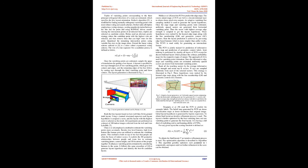However, candidate 3D boxes are generated and inference is formulated in terms of a single high-dimensional discrete random variable. A triplet of vanishing points corresponding to the three principal orthogonal directions of a room is estimated, specifying the box layout orientation. Rother's algorithm is modified for finding mutually orthogonal vanishing points with more robust voting and search schemes. Rother ranks all triplets employing a voting strategy, scoring angular deviation between the line and the point, using RANSAC-driven search. Hedau used an alternate greedy strategy where the candidate point with the highest vote is selected, and extends the linear voting scheme to a more robust exponential voting scheme.